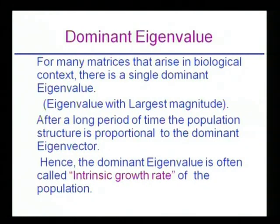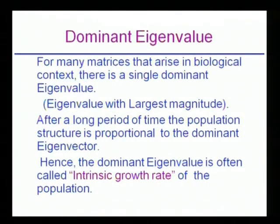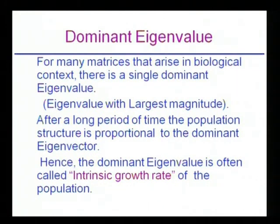For many matrices, especially those that arise in a biological context, there is a single dominant eigenvalue — that is, an eigenvalue with the largest magnitude. For example, if 1, −2, and 3 are the eigenvalues of a 3×3 matrix, then 3 is the dominant eigenvalue. After a long period of time, the population structure becomes proportional to the dominant eigenvector. For this reason, the dominant eigenvalue is often called the intrinsic growth rate of the population.